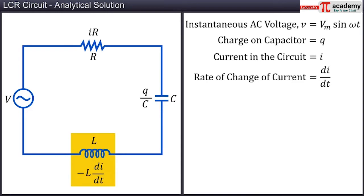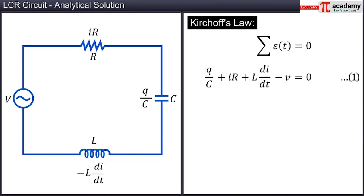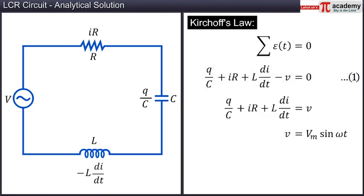The negative sign signifies the direction of the induced current according to Lenz's law. Applying Kirchhoff's loop rule to this circuit, we get Q/C + IR + L dI/dt minus V equals 0. Let this be equation 1. Since V is equal to Vm sin omega T, we get Q/C + IR + L dI/dt equal to Vm sin omega T.